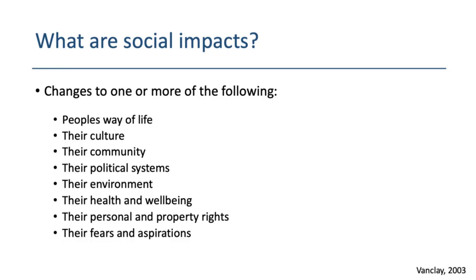Social impacts also include changes to personal and property rights — which can be really important where people are economically affected — and changes to people's fears and aspirations: their perceptions about their own safety, their fears about the future of their community, and their aspirations for what they want for their community's future. These things are pretty broad and can be really difficult to translate into something measurable.